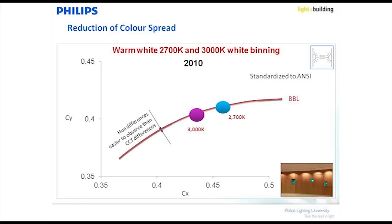We started our binning approach basically in 2008. Initially there was a huge cloud of products. It was improved by ANSI, which made color points closer together — but that was still a seven-step MacAdam ellipse from one end to the other. We improved that to five MacAdam, and now we're improving it to three MacAdam.